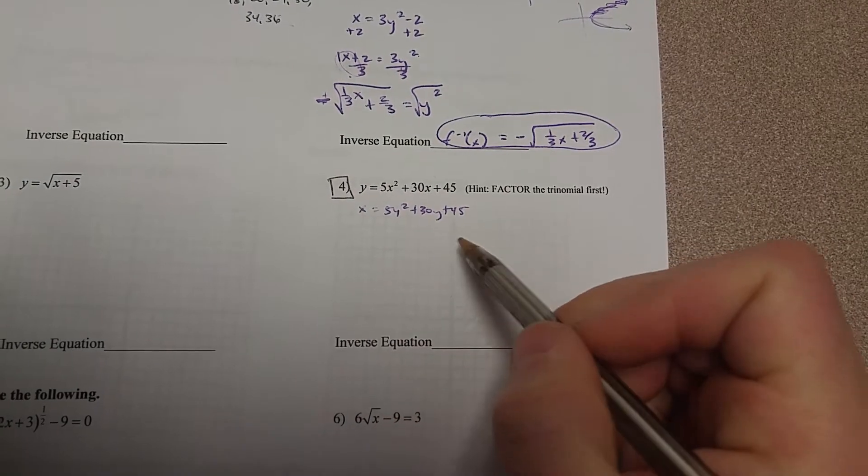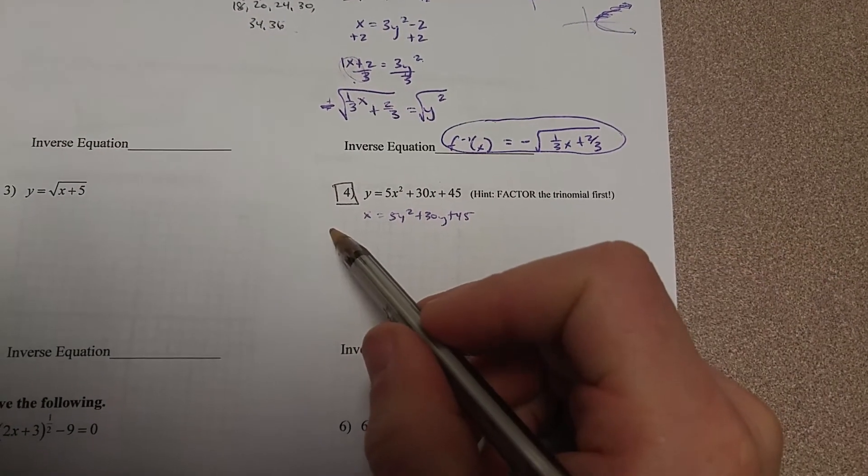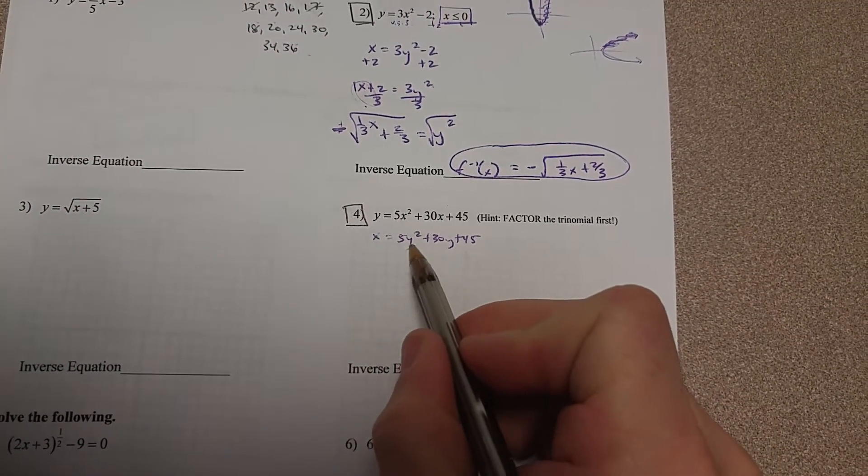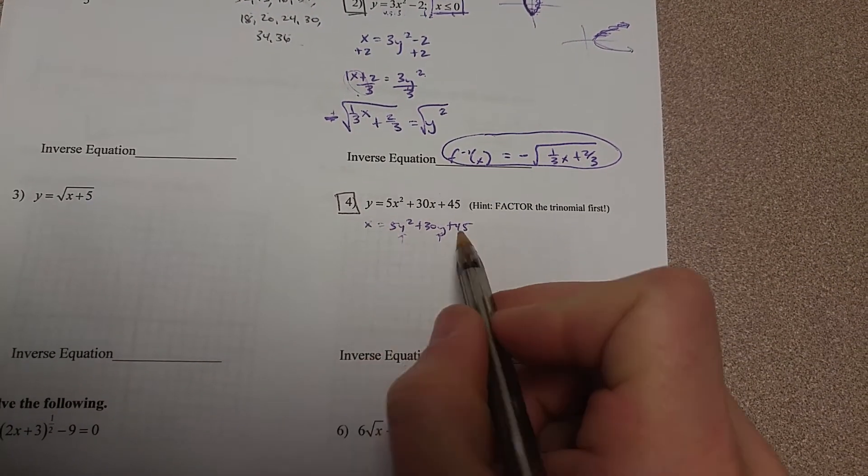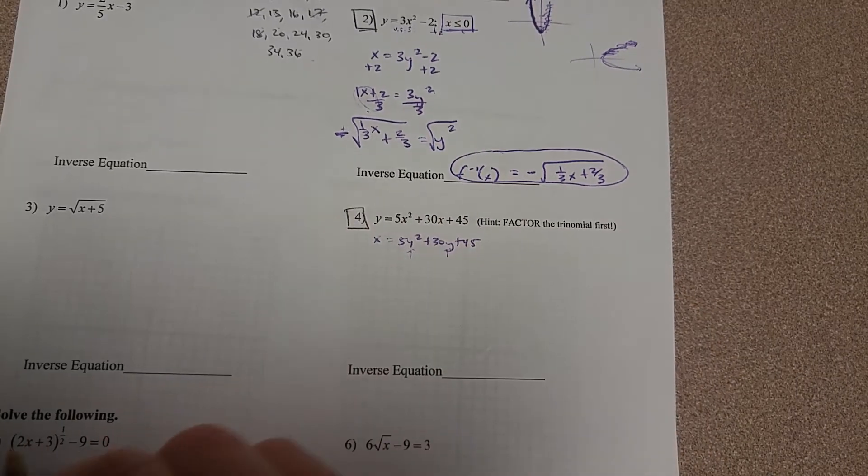If you try to solve this by subtracting 45 or something like that, you're going to have a problem because you have two y's. Which one are you going to solve for? You can't combine them because one's y squared and one's y, and you kind of get into some trouble there.